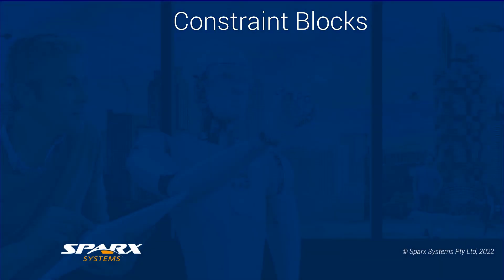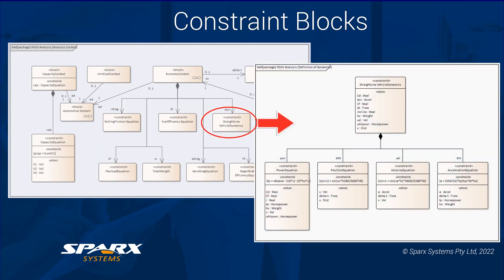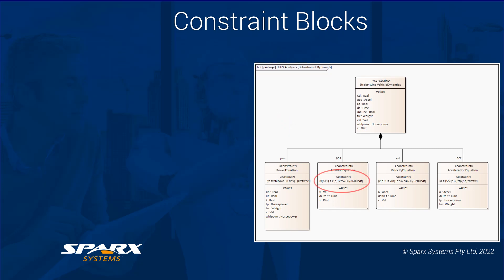The constraint blocks are where we define the formula or equations behind the parts that will be used in the parametric models. In the example of the HSUV, we have a number of constraint definitions. The straight line vehicle dynamics is a specific group that is part of a broader group of constraints. These constraints contain equations that are used in the related parametric models.